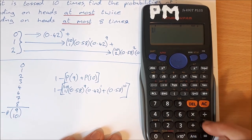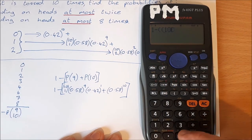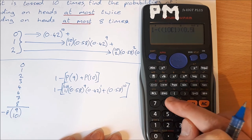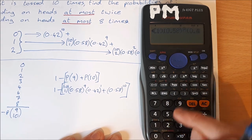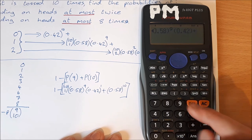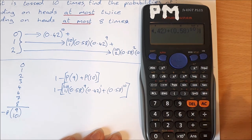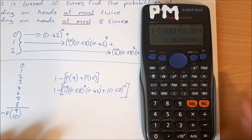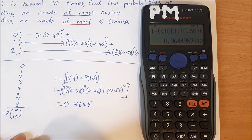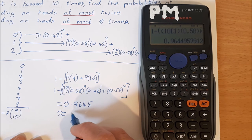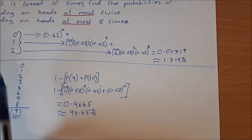Entering that into the calculator: 1 minus (10 choose 1 × 0.58^9 × 0.42^1 + 0.58^10). Don't forget to close your brackets. That equals 0.9645 to four decimal places, which is approximately 96.45%. So the probability of landing on heads at most eight times is 96.45%.